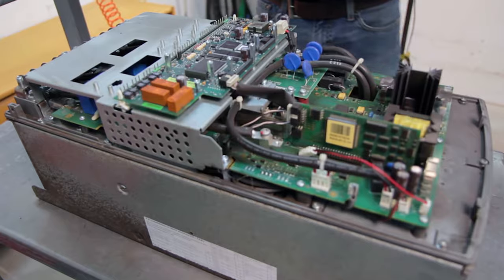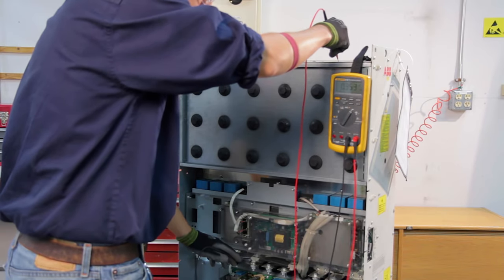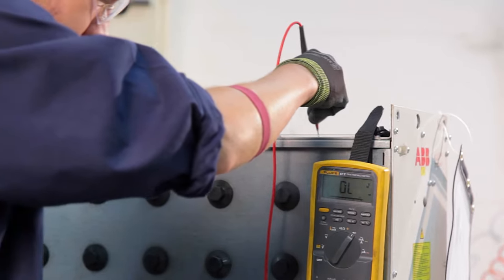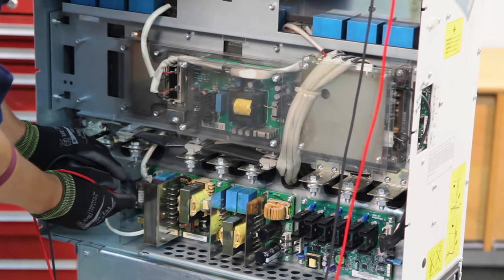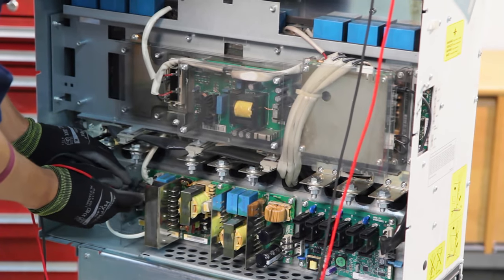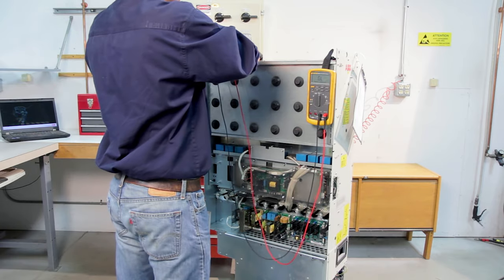The repair process starts with the technician performing a general condition inspection for dust, moisture, corrosion, or other environmental stress. To further troubleshoot the cause of the failure, the technician uses a multimeter to perform static checks. The technical inspection concludes with the identification of broken, damaged, or defective components.